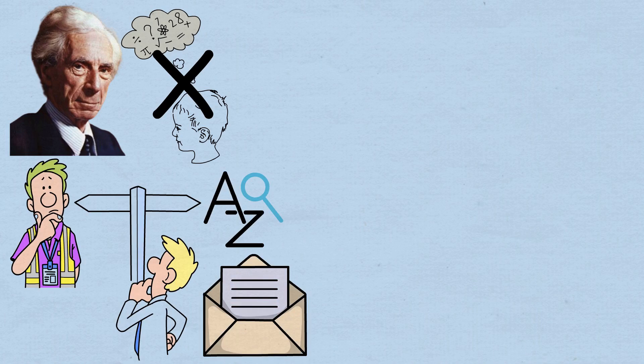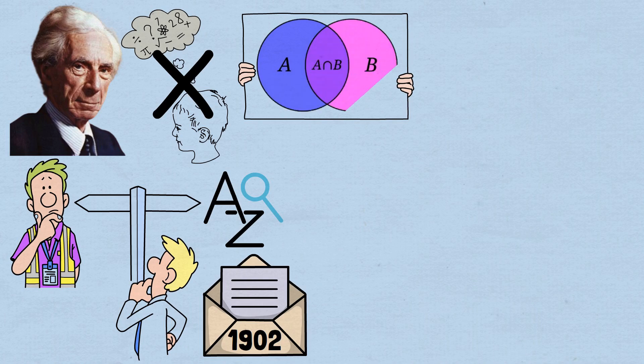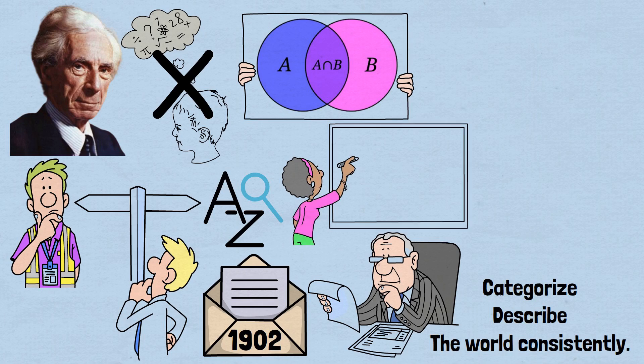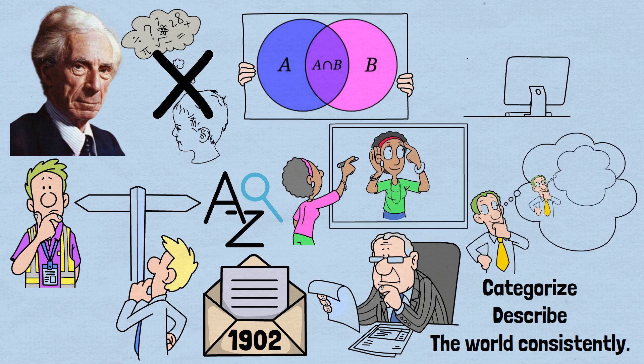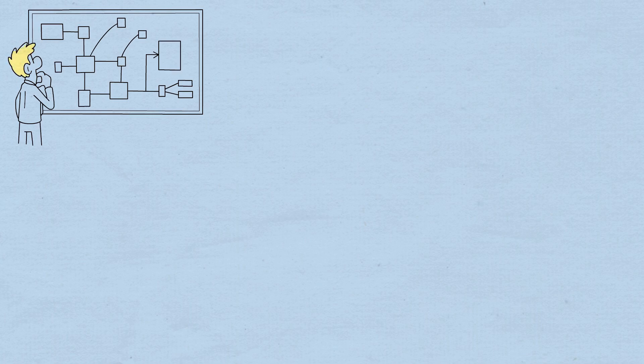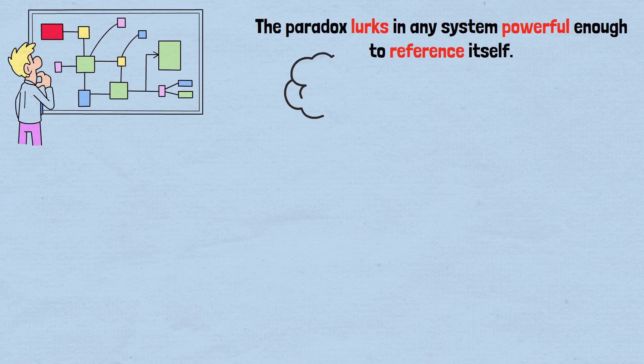When Russell wrote his letter to Frege in 1902, he wasn't just pointing out a technical issue in set theory. He was uncovering a limitation in our ability to categorize and describe the world consistently. Consider how often we use self-reference in everyday thinking. We have thoughts about our thoughts. We make plans about our planning process. We create categories that might include themselves. The paradox lurks in any system powerful enough to reference itself. And that includes our minds and our language.